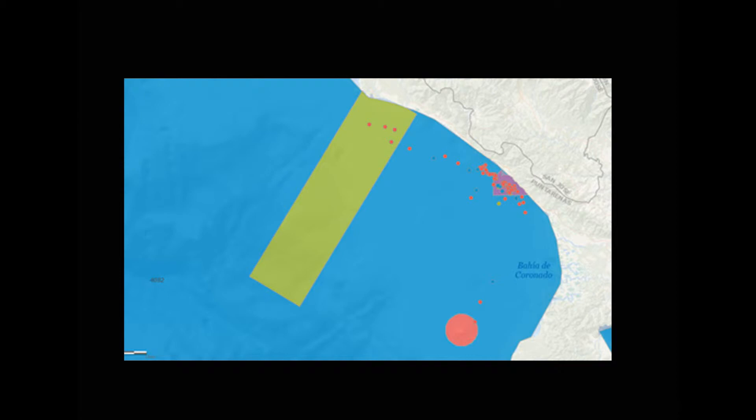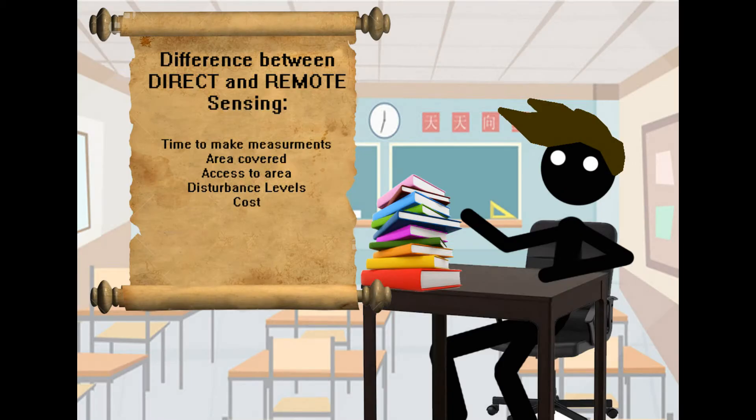What's the difference between direct and remote sensing? Predominantly they are time measurements, the area covered, the access to area, the disturbance levels, and cost effectiveness. Disturbance levels: if you're directly disturbing something, you may be changing or altering the data in some way, whereas remote sensing may not capture as much, but the data won't be disturbed. So it's a bit of whichever you choose.